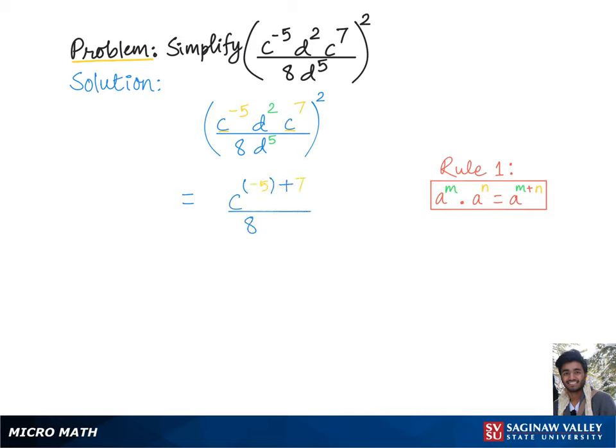Now let's work on the exponents with common base d using rule 2, according to which we'll get common base d raised to the higher power 5 minus the power on the other side, that is 2, and the whole group squared.